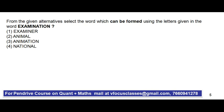Third question: from the given alternatives, select the word which can be formed using the letters in the word EXAMINATION. The first option contains the letter R, but there is no R in EXAMINATION, so it cannot be formed. The second option ANIMAL contains L, which is not in EXAMINATION. The fourth option also contains L, so it cannot be formed either. Only the third option can be formed using the letters of EXAMINATION.